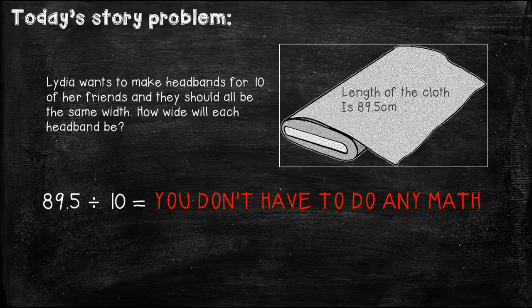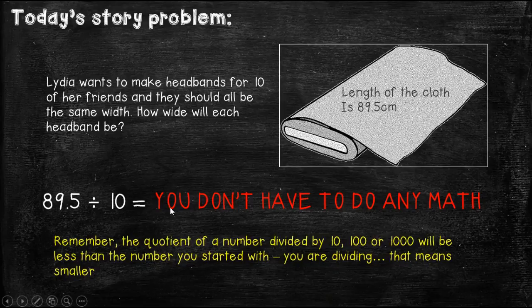But wait, you don't have to do any math when you are dividing by 10s, 100s, or 1000s. Remember, we talked about this before in an earlier topic. Now we're just going to add in decimals. Remember, the quotient of a number, that means a number which is the answer to a division problem, is a number divided by 10, 100, or 1000, is going to be less than the number you started with. Because you're dividing, that means you're getting a smaller number.